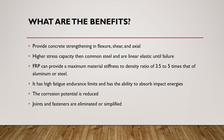Fiber reinforced polymers are highly advantageous due to their high strength-to-weight ratio and strength in flexure, shear, and axial directions due to the intricate placement and strength of the fibrous material. FRP's high strength-to-weight ratio correlates with easy handling and fast application rates for their variety of uses. This is beneficial when the material is to be used in overhead applications or along the side of a structure. FRP has a higher stress capacity than common steel and is linear elastic until failure. FRP can provide a maximum material stiffness-to-density ratio of 3.5 to 5 times that of aluminum or steel. It has high fatigue endurance limits and the ability to absorb impact energies. Joints and fasteners are also eliminated or simplified as FRP can be molded into any desired shape, whether linear or not.